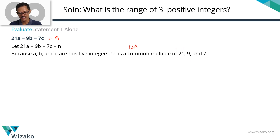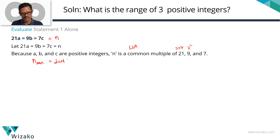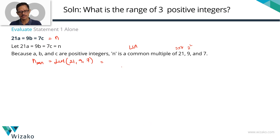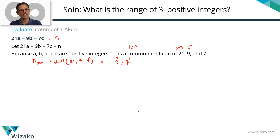The first step to computing LCM is prime factorizing. 21 prime factorizes as 3 × 7; 9 as 3²; 7 is a prime number. LCM is the product of the highest powers of all primes. The different primes we see are 3 and 7. The highest power of 3 is 2, so we take 3². The highest power of 7 is 1. The product of the highest powers of all primes is 3² × 7, which equals 63.